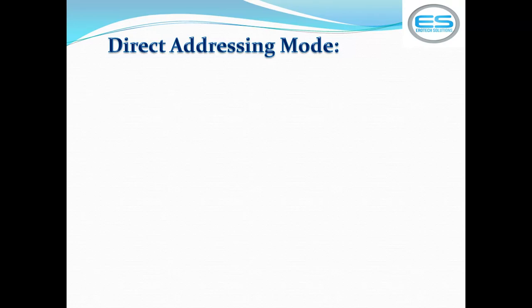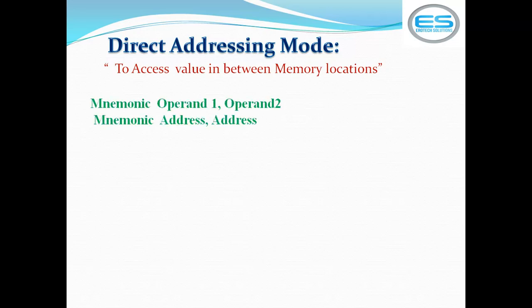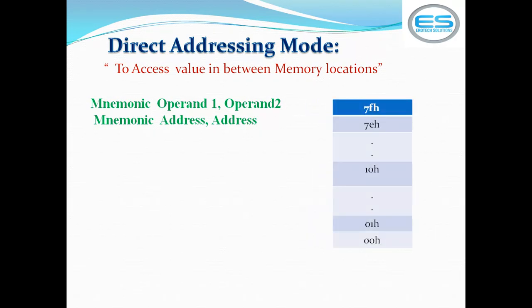The third addressing mode is direct addressing mode. This addressing mode helps to share data between memory locations — both operands are addresses. It clearly works with RAM memory locations. For example: first save a constant value 67H into address 10H, then MOV 00H, 10H — the value of memory location 10H is moved to 00H. In this mode, both operands are address locations.